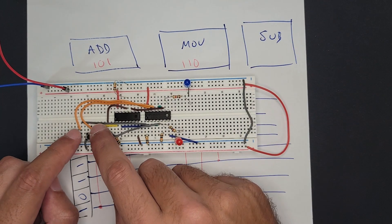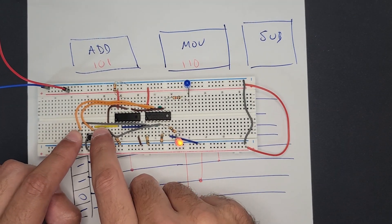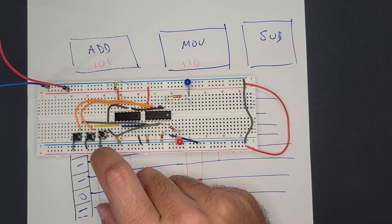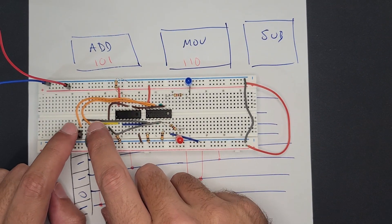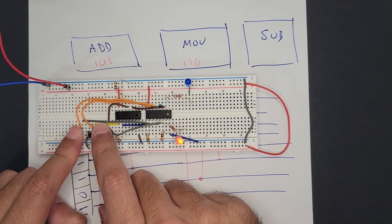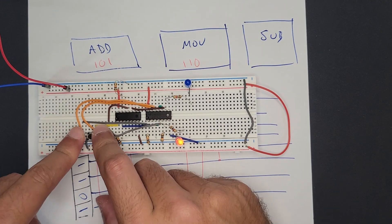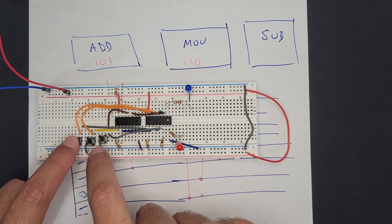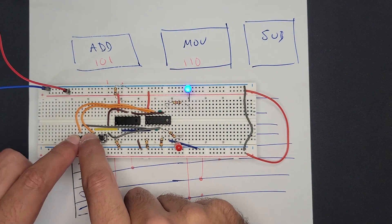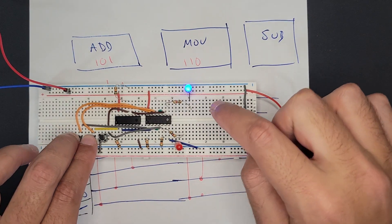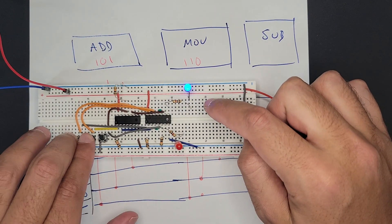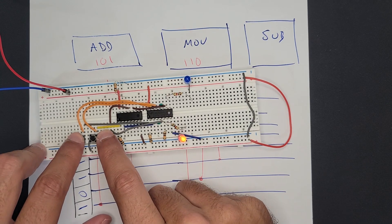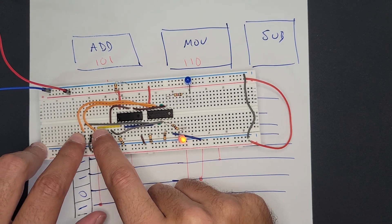So 101 activates the ADD command — it does. You can imagine this is the instruction coming into the CPU; it sees 101 and executes ADD on whatever is in the registers. Then 110 is MOVE — it activates the MOVE operation. This works now. By just changing the bit pattern, we can affect which circuits are being turned on and off.